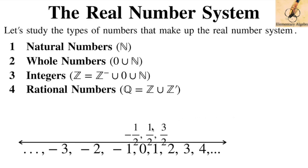For example, one-half has a decimal representation of 0.5 — it terminates, so it satisfies being a rational number. And when I say repeating, take one-third: its decimal representation is 0.33333... You'll see ellipses after the threes, or a vinculum above the three, which means it repeats. That's also a rational number in decimal form because it satisfies the definition of repeating.